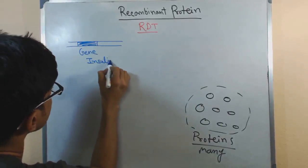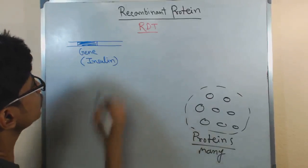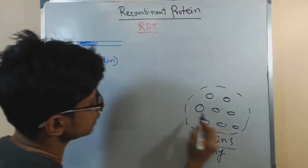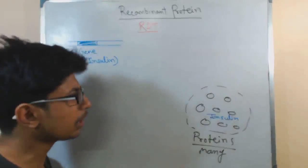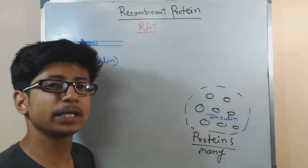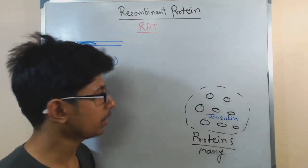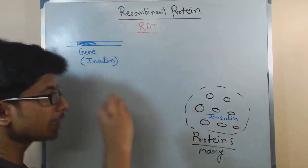This is the insulin gene. This gene produces this protein which is insulin. What we want to do here is we want a lot of insulin in a small amount of time and in a way that it becomes cheaper because it will be consumed by many people irrespective of their economic condition. This is the gene of our interest, it becomes the gene of interest.